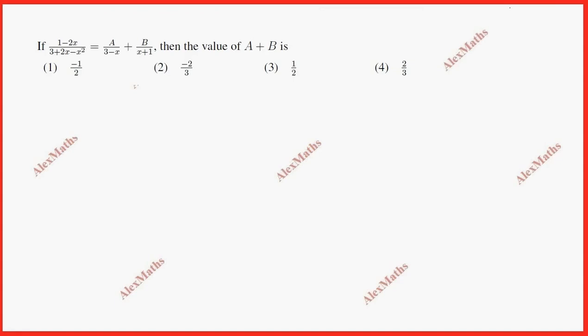Hi students, Lex here. If (1-2x) divided by (3 plus 2x minus x squared) is equal to A over (3 minus x) plus B over (x plus 1), find the value of A plus B.